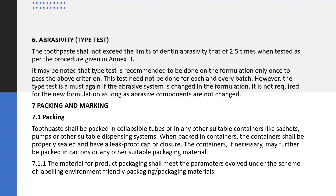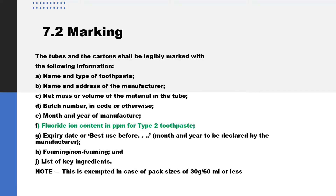Let us now try to understand the packing and marking system. All containers, closures, collapsible tubes, and sachets have to be leak-proof and the closure should be tightly packed. The labeling details to be mentioned on the packaging include: name and type of toothpaste (whether fluoridated or non-fluoridated), address of the manufacturer, quantity of the substance, batch number, month and year of manufacturing, best-before period, and expiry date. It is also important to note that the fluoride content in ppm has to be mentioned for the type of toothpaste, along with a list of ingredients used in the product.